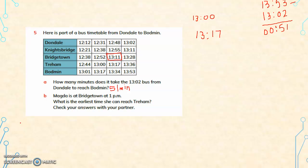If February has 29 days, that year is called a leap year. You can also calculate your own age: take your date of birth year, then find the difference between 2021 and the year you were born. That will help you find your age.